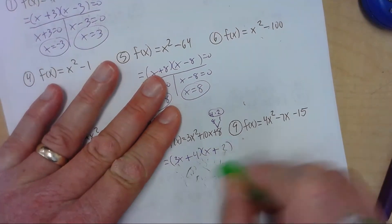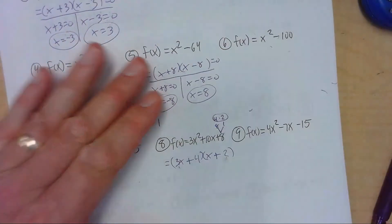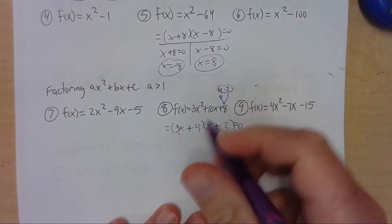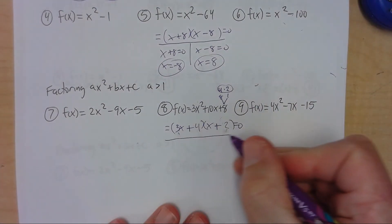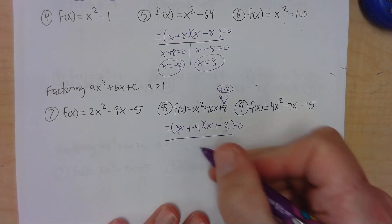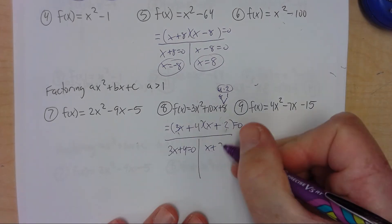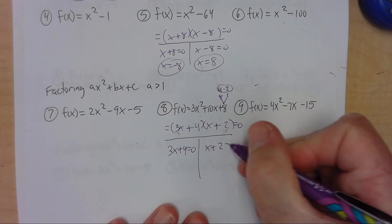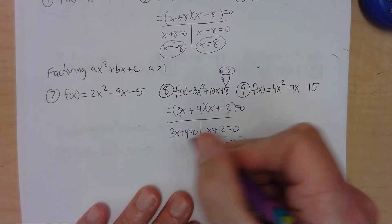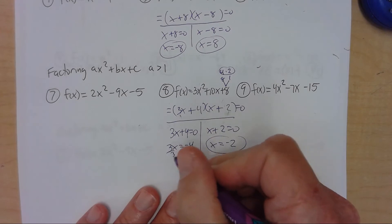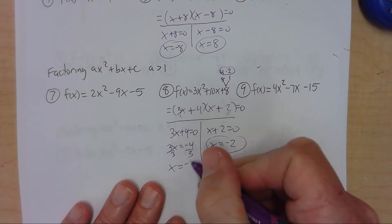So I'm going to get rid of this out of here. I don't need that because I've got to do zero product property. Make a T. So 3x plus 2 is equal to 0. Subtract the 2 over. x is equal to negative 2. Subtract 4 over. 3x is negative 4. Divide by 3. And we get x is negative 4 thirds.